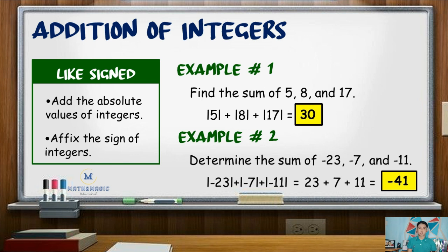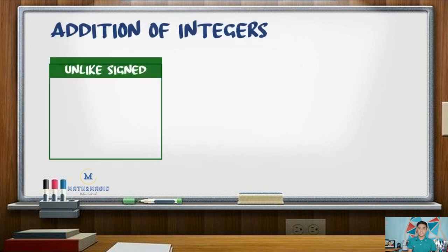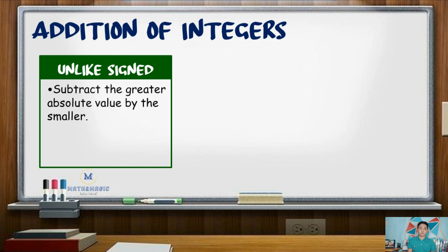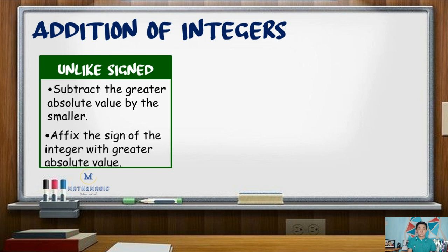The second rule will be applied if we are adding unlike signed or different signed integers. Here, we first get the absolute value of the addends. Next, subtract the smaller value from the larger, then affix the sign of the larger absolute value to the difference.